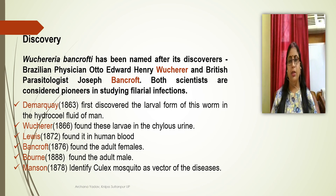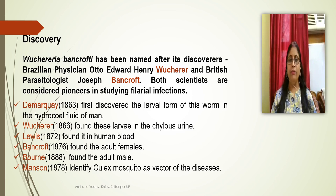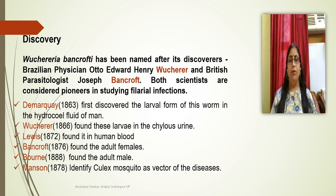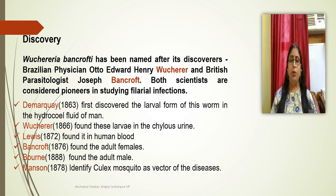Lewis found microfilariae in human blood. Bancroft found the adult female worm. Bourne also found the adult female. Manson discovered its vector, which is the Culex mosquito. These are responsible for causing the disease filariasis.